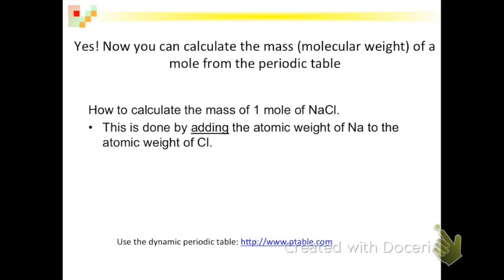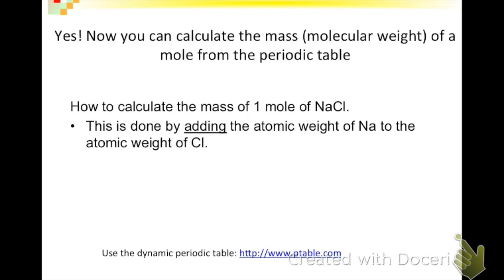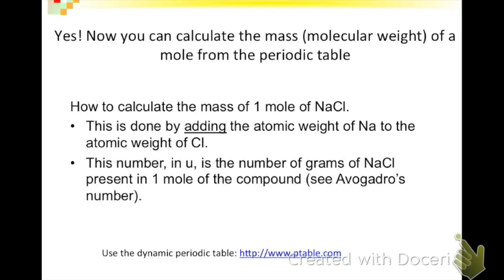The rule is that one mole of a substance is equal to its atomic mass expressed in grams. We're going to add the atomic mass or atomic weight of sodium to the atomic weight of chlorine to figure out the total weight of one molecule of sodium chloride. That, expressed in grams, is going to be the exact mass of one mole of sodium chloride.